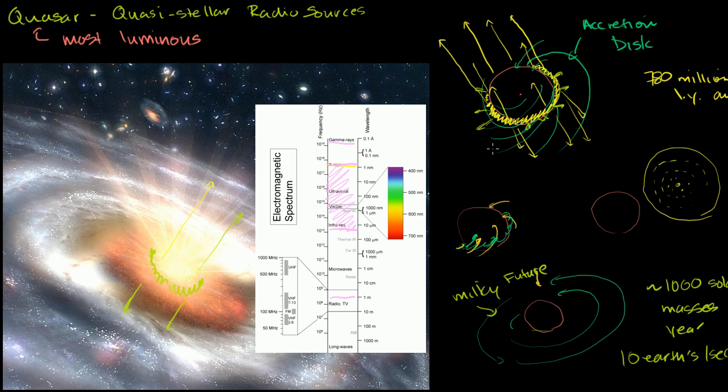But we have to remember that all of these quasars are quite far away. The closest is 780 million light years away. Many of them are many billions of light years away.